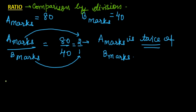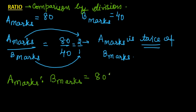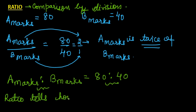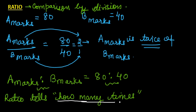This comparison by division can also be written as A's marks is to B's marks, equal to 80 is to 40 — this is the way we represent the ratio. Ratio basically tells you how many times is one quantity of the other quantity.